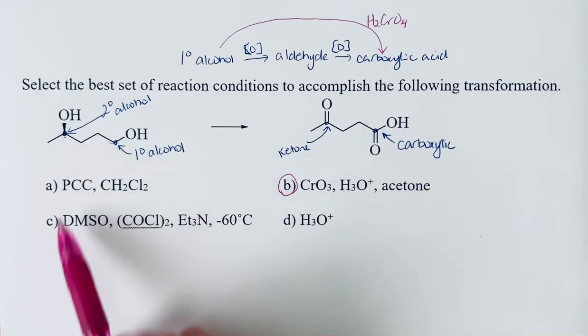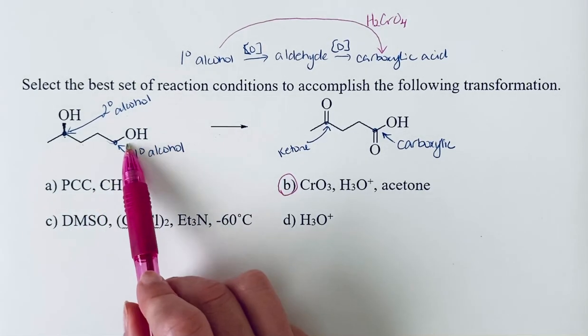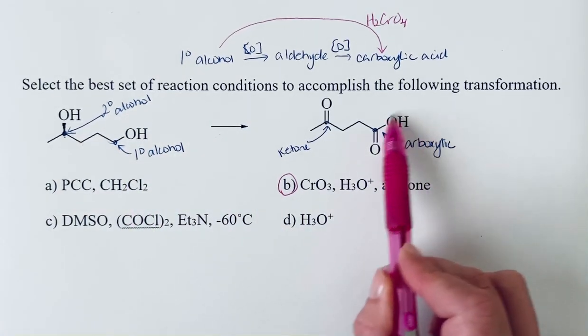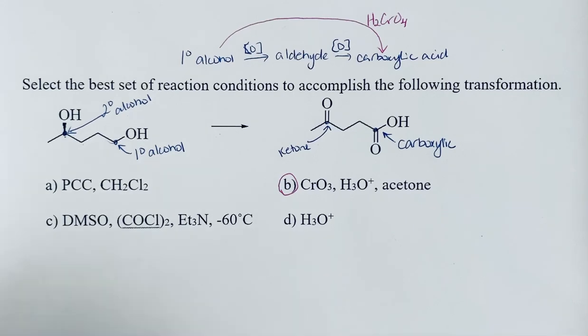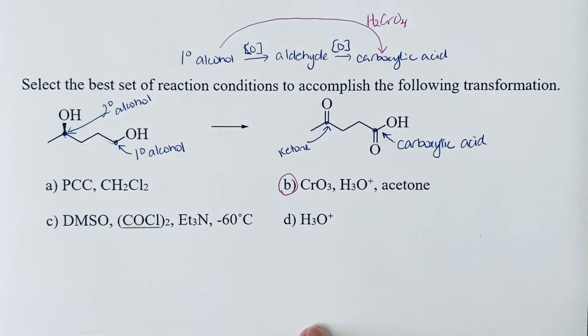A and C are also oxidizing conditions, but what they would do, both of these conditions would take the primary alcohol and oxidize it only to the aldehyde. So you just have a hydrogen here instead of the carboxylic acid that we currently have. So we need to use option B.